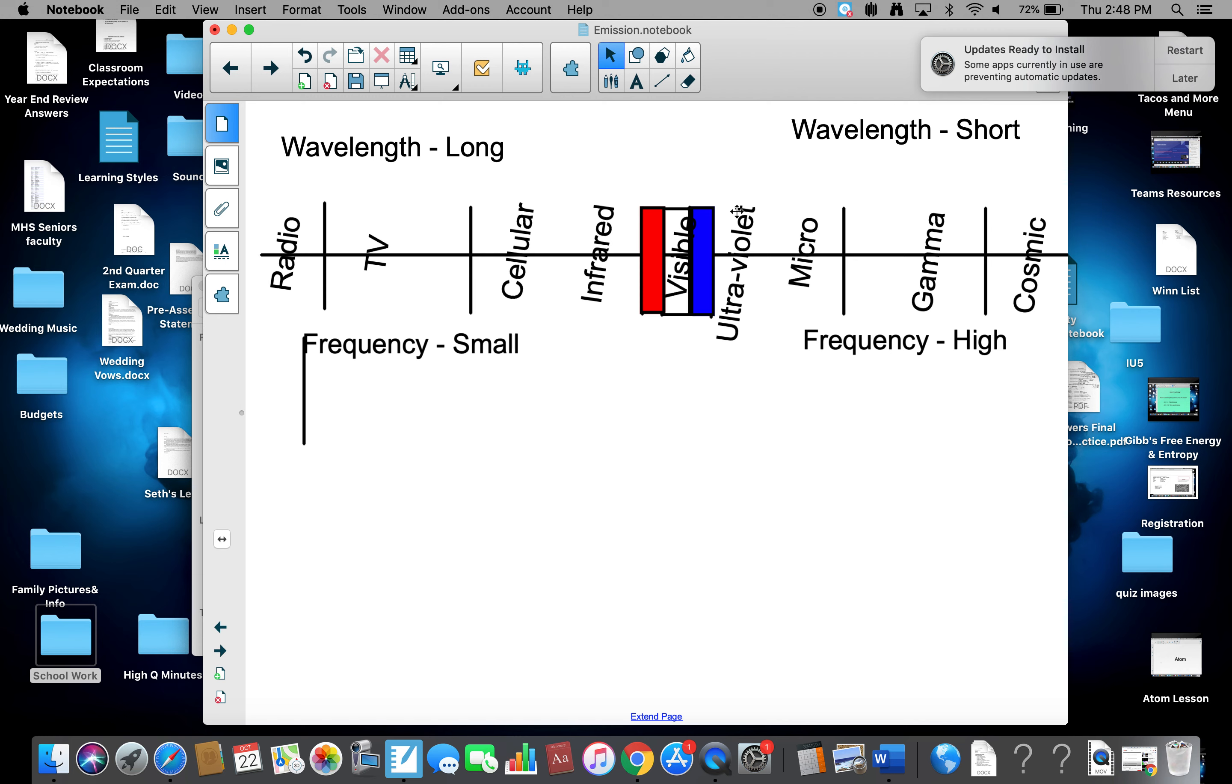Here is a breakdown of all the different forms of energy that exist, from low-wave energy, like a radio and TV, cellular, infrared, all the way up to infrared, microwave, gamma, and even cosmic rays.